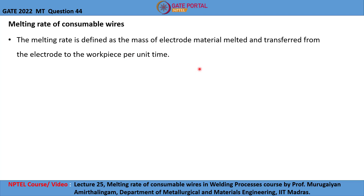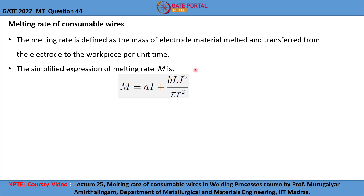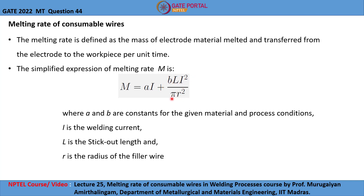Let me show the equation for melting rate of consumable wire. The simplified expression of melting rate M is: M = A·I + B·L·I² / (π·R²), where A and B are constants for the given material and process conditions, I is the welding current, L is the stick out length, and R is the radius of the filler wire.